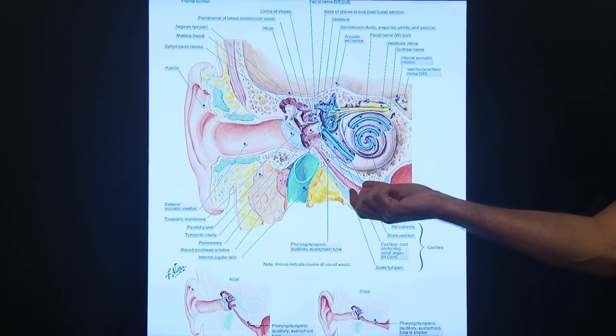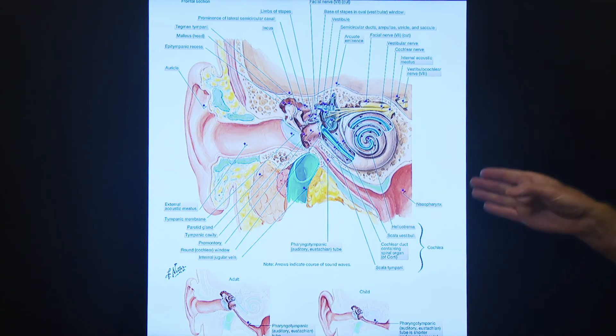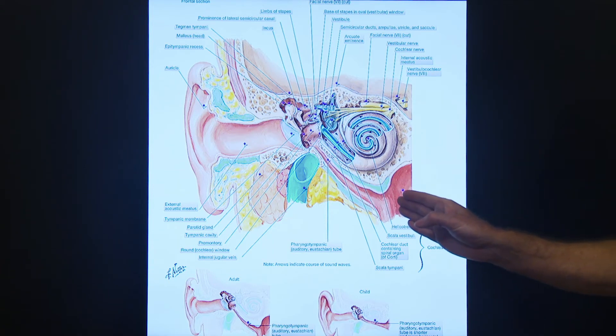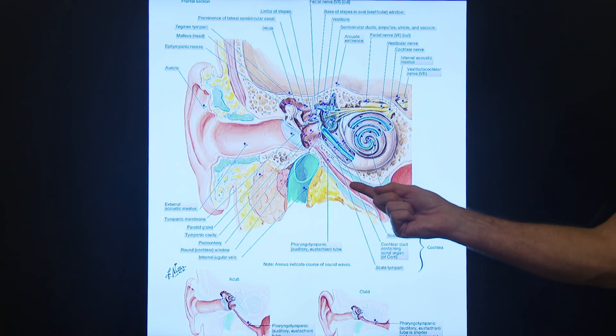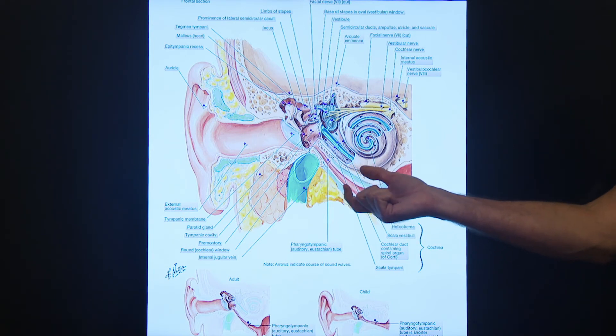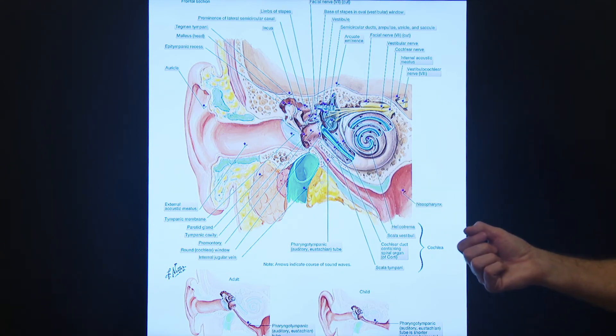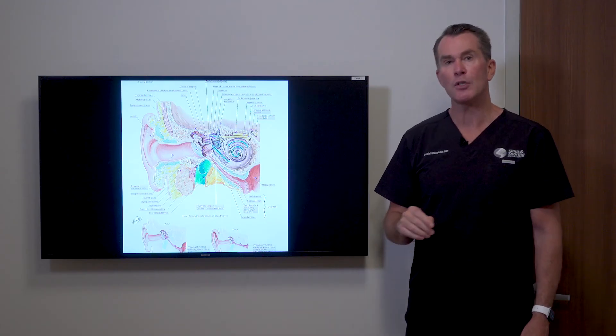We have cool techniques nowadays we didn't have before where we can go back inside the nose under IV sedation and introduce a small catheter and balloon into the eustachian tube. When we expand that, it breaks down that scar tissue which prevents the eustachian tube from opening and will allow it to function normally and equilibrate the middle ear pressure each time we swallow.